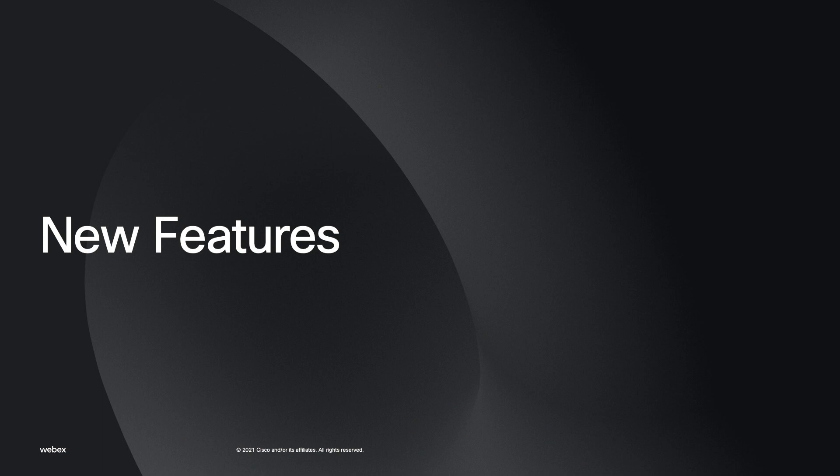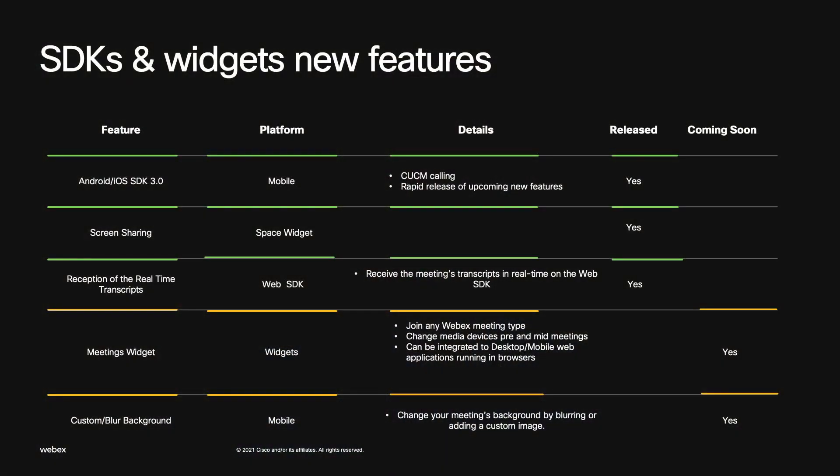Let me share some exciting news about what we have released and what's coming next. Four months ago, we released our Android and iOS SDKs version 3.0, which enable UCM registration and calling, as well as faster release of new features on these mobile SDKs. We also released screen sharing support on the space widget, which completes the fundamental features needed for collaboration. Additionally, we released the ability to receive meeting transcripts in real time on our Web SDK — an important feature for use cases such as compliance, just-in-time knowledge discovery, and text analytics.